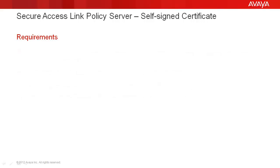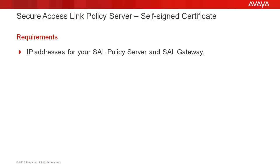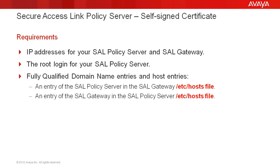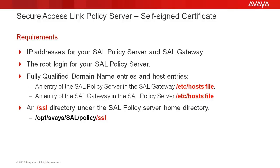Please make sure you have the following information or have completed any of the relevant tasks before proceeding. You will need the IP address of your SAL Gateway and Policy Server, the root login for your SAL Policy Server, host entries to both your SAL Gateway and your Policy Server, and finally, you will need to create an SSL directory under the SAL Policy Server home directory.